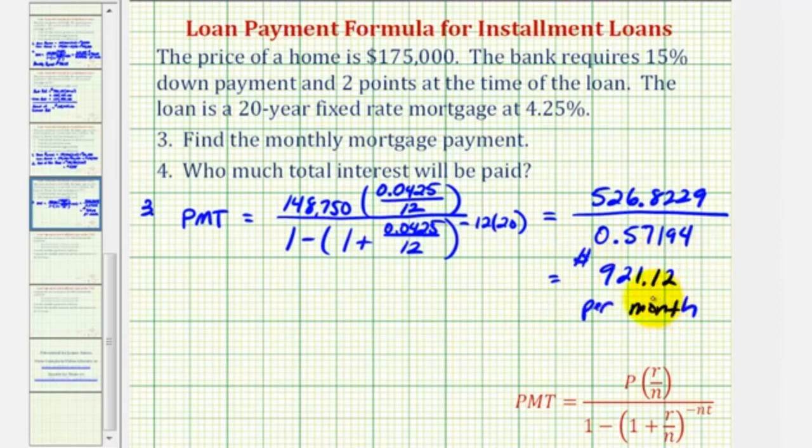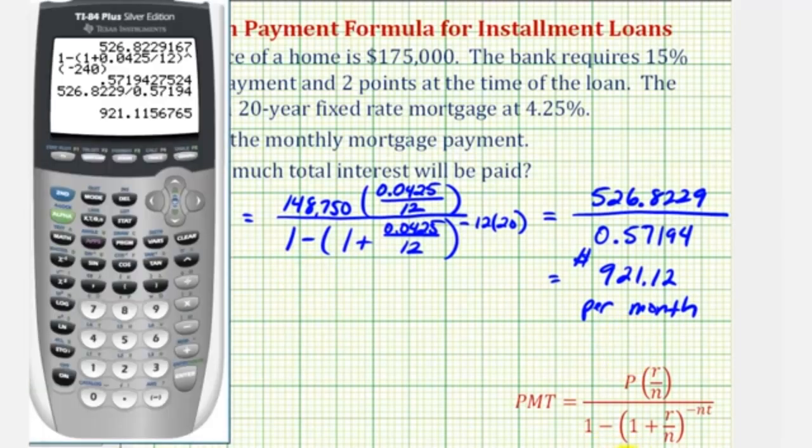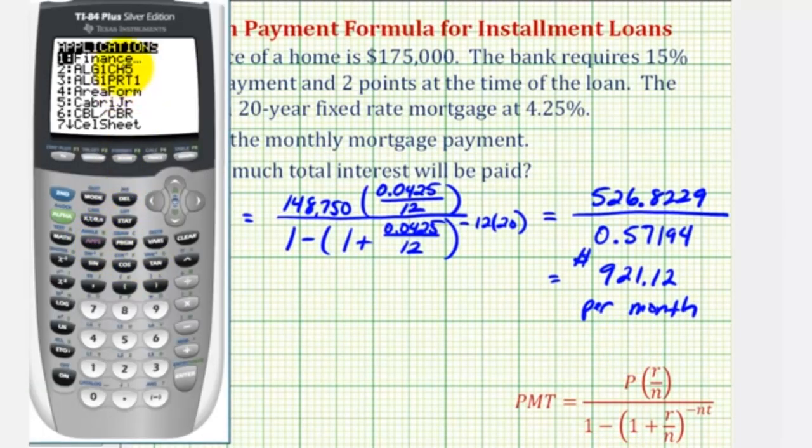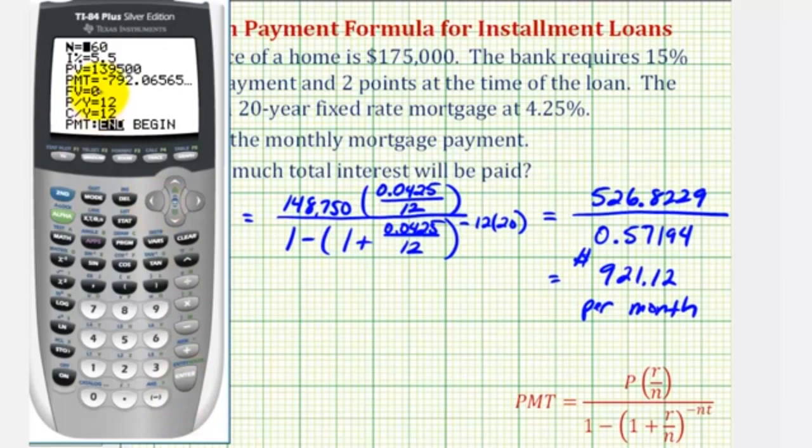Now again, let's go ahead and verify this using the finance menu on the graphing calculator. So we're going to press the apps key, enter for finance, enter for TVM solver. N is the number of months over the 20 year period, 20 times 12 is 240. The interest rate is 4.25%. The loan amount or present value is 148,750. We'll come back to the payment. The future value would be zero when the loan is paid off. Payments per year is 12, compounds per year is 12, payments are at the end of the month.